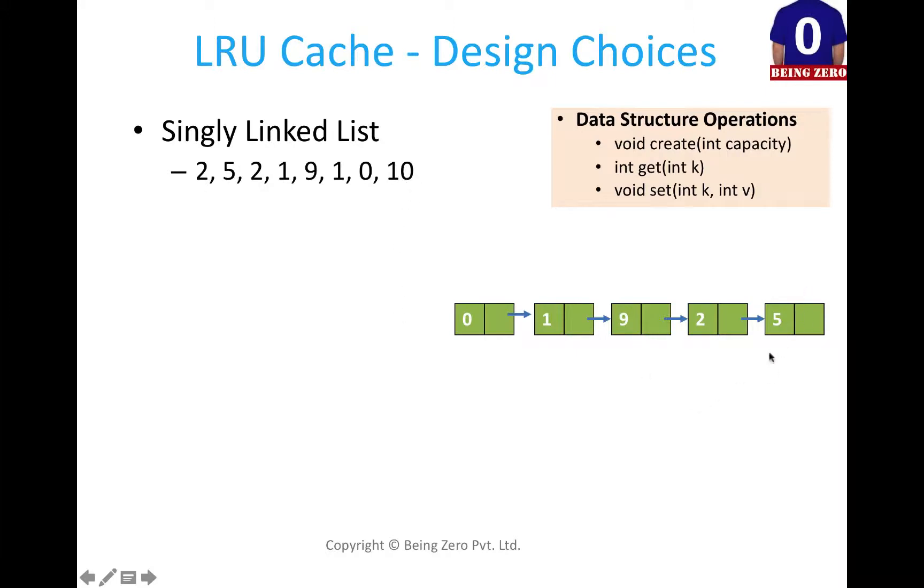When we are removing 5 and inserting 10, we do not have to do the shifting. So removal of this element and putting this element in the beginning is an order of one operation. We will do a detailed analysis of get and set here now.